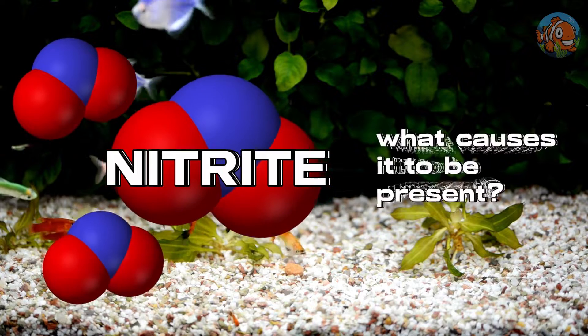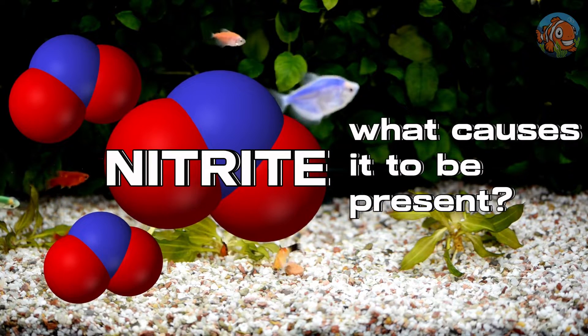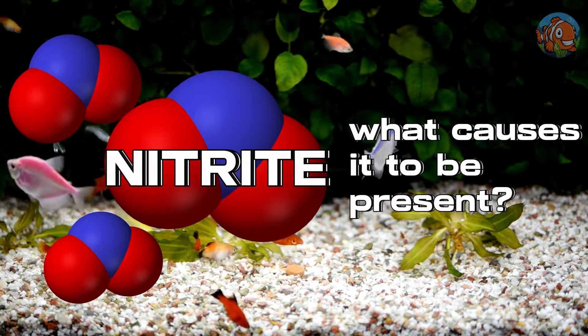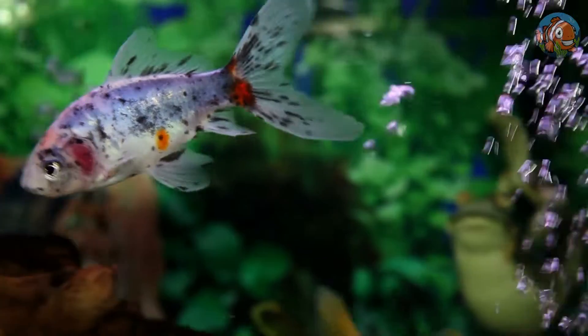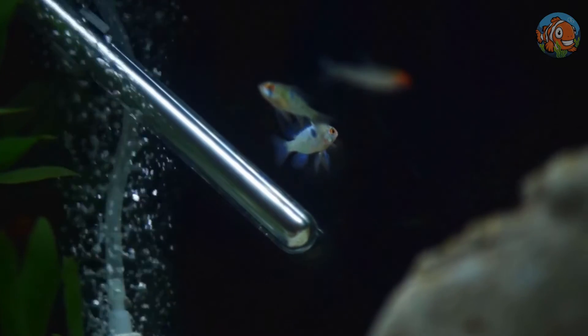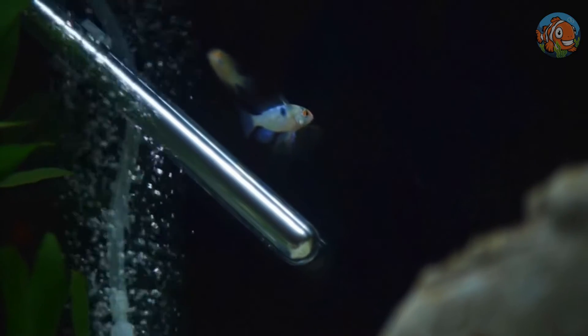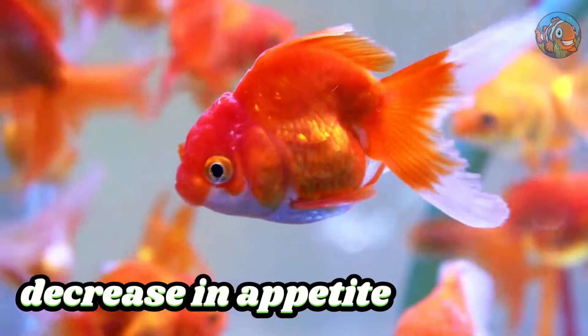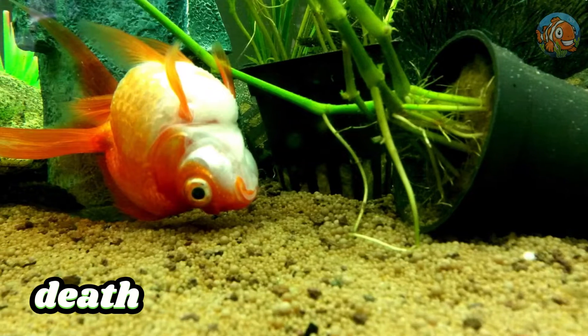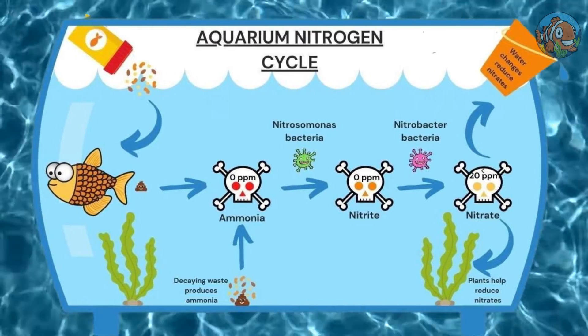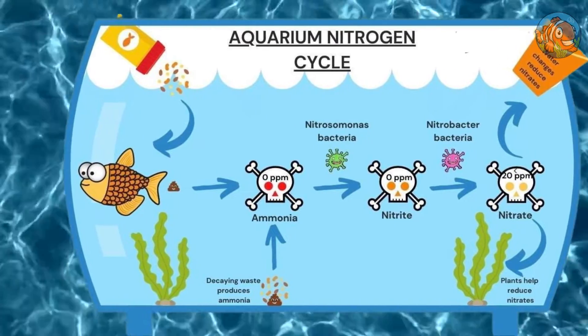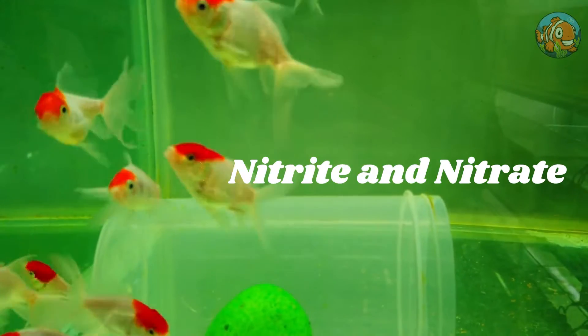Before you develop a solution, you must know how and where the problem's coming from. So today we'll first discuss nitrite and what causes it to be present in your tank. The nitrogen cycle in an aquarium depends critically on controlling the nitrite levels. With sophisticated testing tools, it might be easier to identify this colorless and odorless molecule. If left uncontrolled for too long, excessive nitrite concentrations can result in significant issues for your fish, including decreased appetite or even death from nitrite poisoning. Understanding the nitrogen cycle is also crucial for maintaining a fish-friendly aquarium. Beneficial bacteria are involved in this process, turning ammonia into nitrite and nitrate.